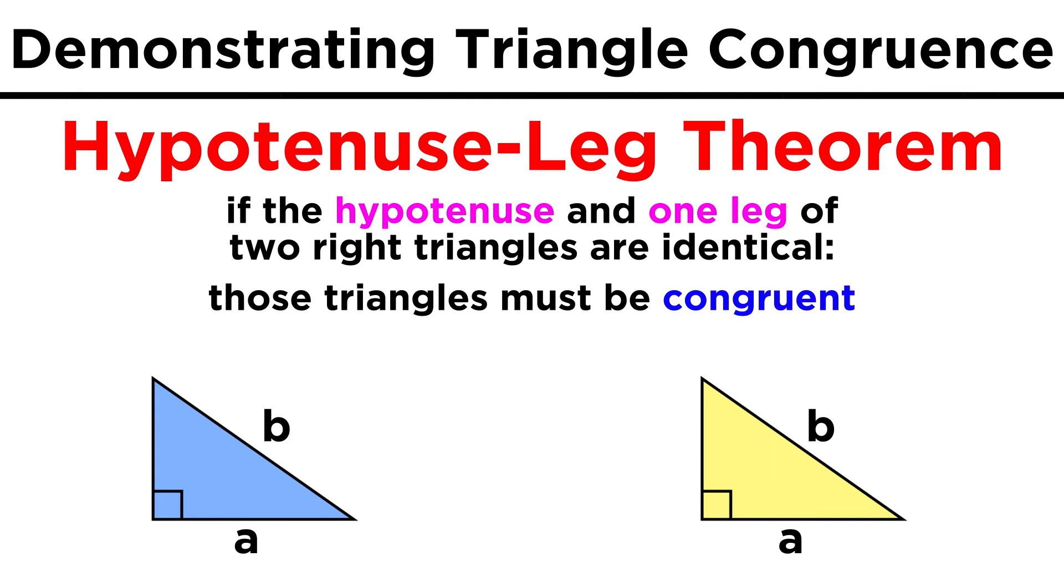A variation of this is the hypotenuse-leg theorem. This uses the hypotenuse and one leg of a right triangle, as well as the right angle that is implied. If two right triangles have the same values for the hypotenuse and one leg, they must be congruent.